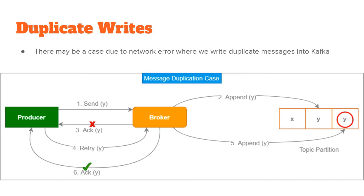Now consider a scenario in which things don't quite go as expected and duplicate writes happen. After the broker has written the message Y into the Kafka topic it acknowledges the producer, but as you can see in step number three in the diagram, the acknowledgement of Y does not reach the producer. After the producer times out, it will again try to write Y into the Kafka topic, because as far as the producer is concerned the message Y has still not been written. The broker thinks this is a new message and again writes Y into the topic, acknowledging the producer — and now we have the problem of duplicate writes.